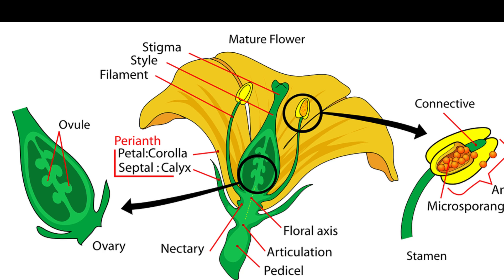3. Stamens — androecium: the male reproductive organs of a flower. Each stamen has: A. Filament — a slender stalk that supports the anther. B. Anther — the sac-like structure at the top of the filament that produces and stores pollen grains, which contain male gametes.